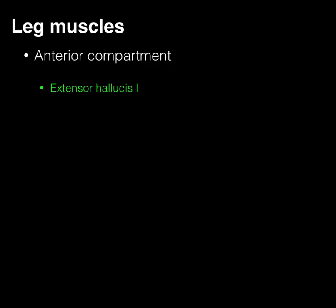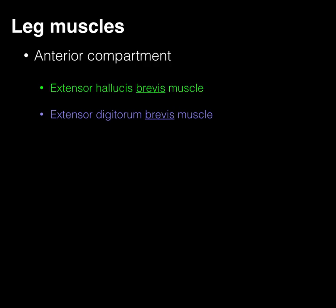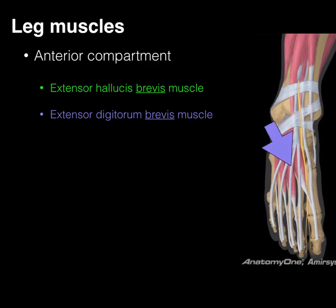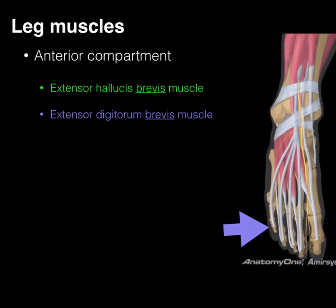So if you have an extensor hallucis longus and an extensor digitorum longus, that means there must be extensor hallucis brevis and extensor digitorum brevis muscles. Looking at the dorsal aspect of the foot, the extensor hallucis brevis goes all the way to the great toe, and the extensor digitorum brevis muscles course along to digits two through five and help with extension of these. These brevis muscles are innervated by the deep peroneal nerve.